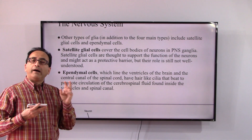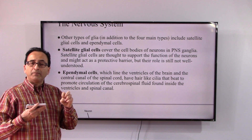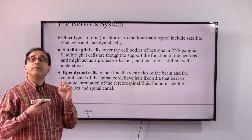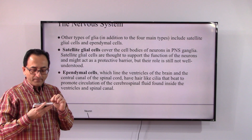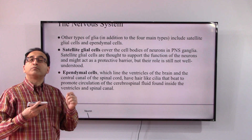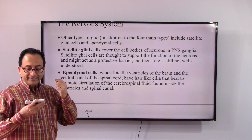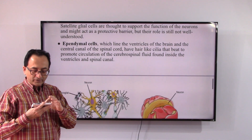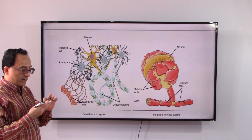Then we have ependymal cells. Just as the heart has atria and ventricles, the middle portion of the brain also has ventricles. Ependymal cells line these ventricles of the brain, and they promote the circulation of cerebrospinal fluid found inside the ventricles and spinal canal. We will cover that in more detail in a separate video.